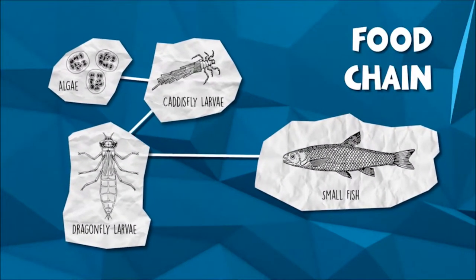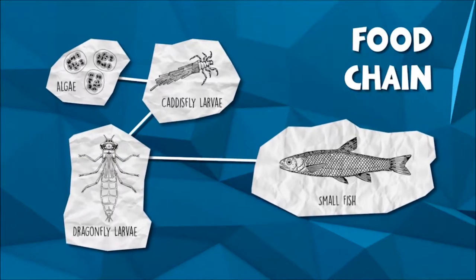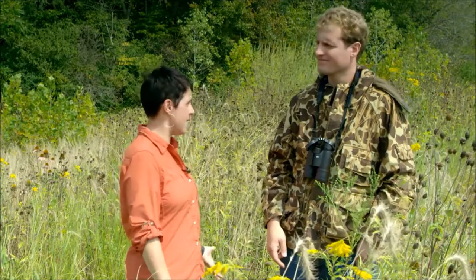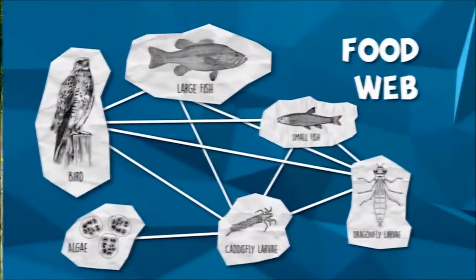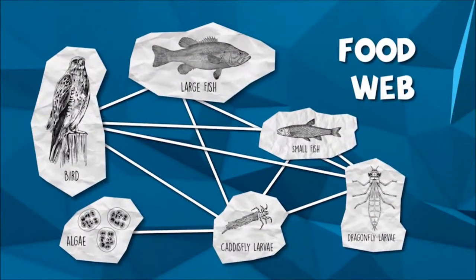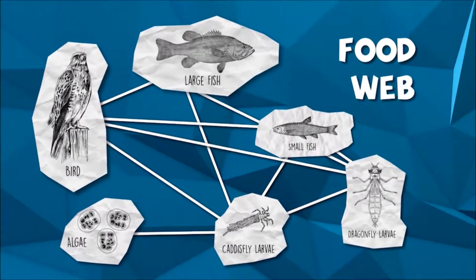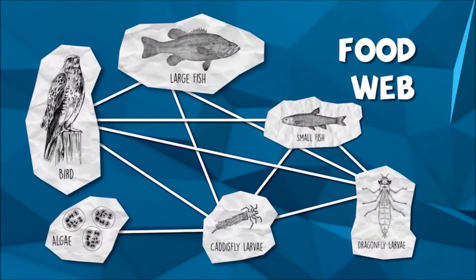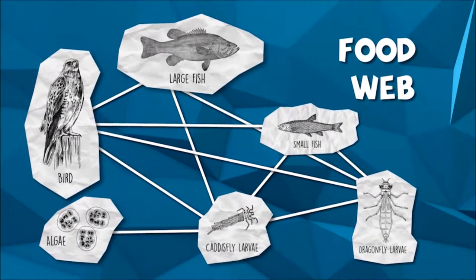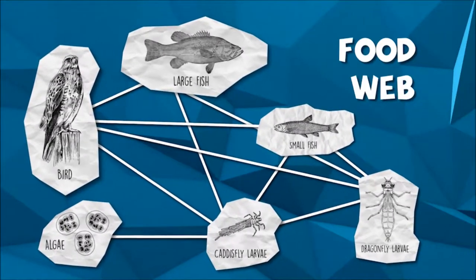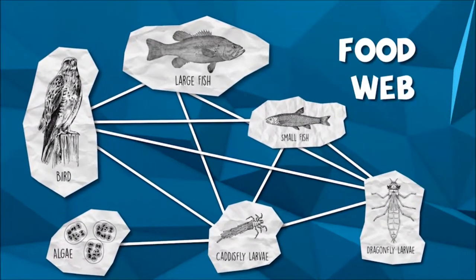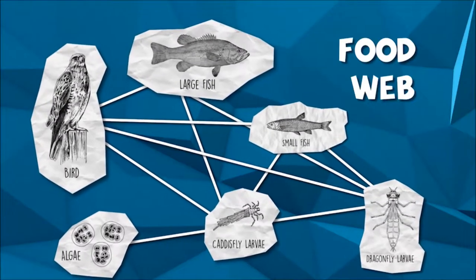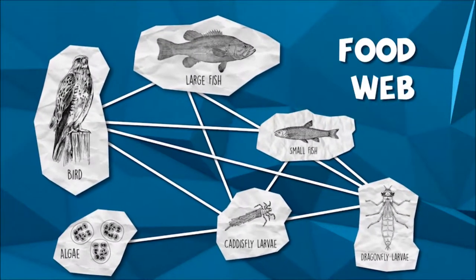Often, aquatic food chains end outside the water by top consumers. For example, that fish may be eaten by an eagle, a bear, or even a person. If we expand our single food chain to the entire system, we get a food web. In reality, that caddisfly may have been eaten directly by a fish or hatched and eaten by a bird, and the dragonfly larvae may have actually eaten a small fish. As you can see, a food web more accurately describes how species interact.